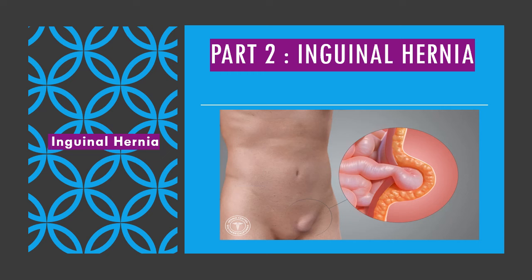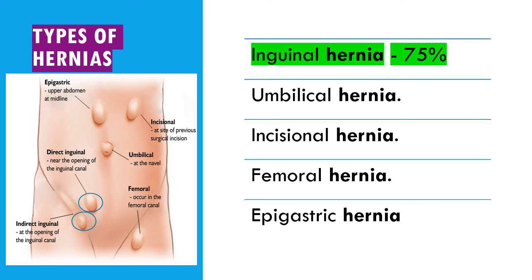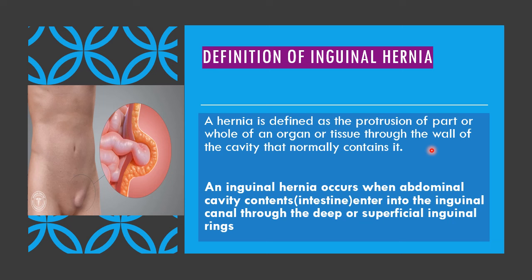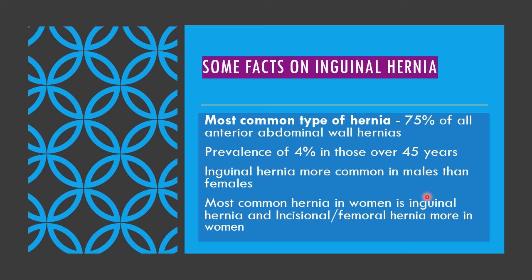We continue with the second part on inguinal hernia. There are five common types of hernia seen in patients; among them, the most common is inguinal hernia, accounting for about 80% of all cases. A hernia is defined as the protrusion of part or whole of an organ or tissue through the wall of the cavity that normally contains it. Inguinal hernia accounts for 75 to 80% of all anterior abdominal wall hernias, with a prevalence of around 4% in those aged 45 years and above.